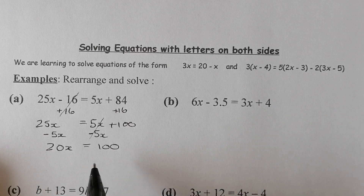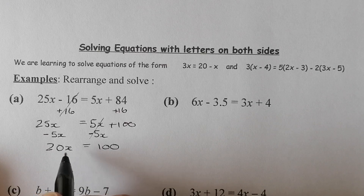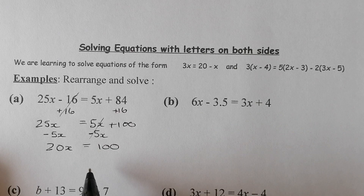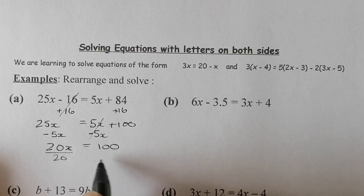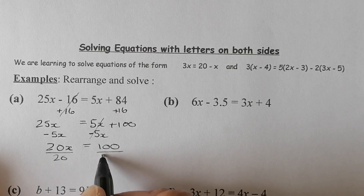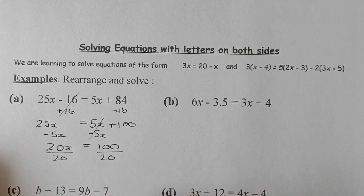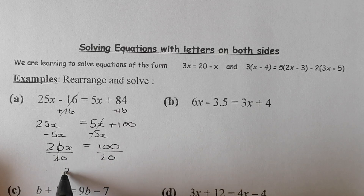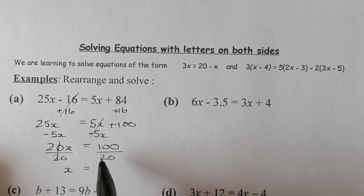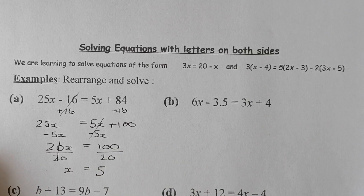Now we're down to the same type of equation from the previous video. I'm going to divide this side by 20, and if I divide that by 20 I must divide the right-hand side by 20. The 20s cancel out and leave 1x, because 20 divided by 20 is 1. And 100 divided by 20 is 5 — so x equals 5 is my final answer for the first question.